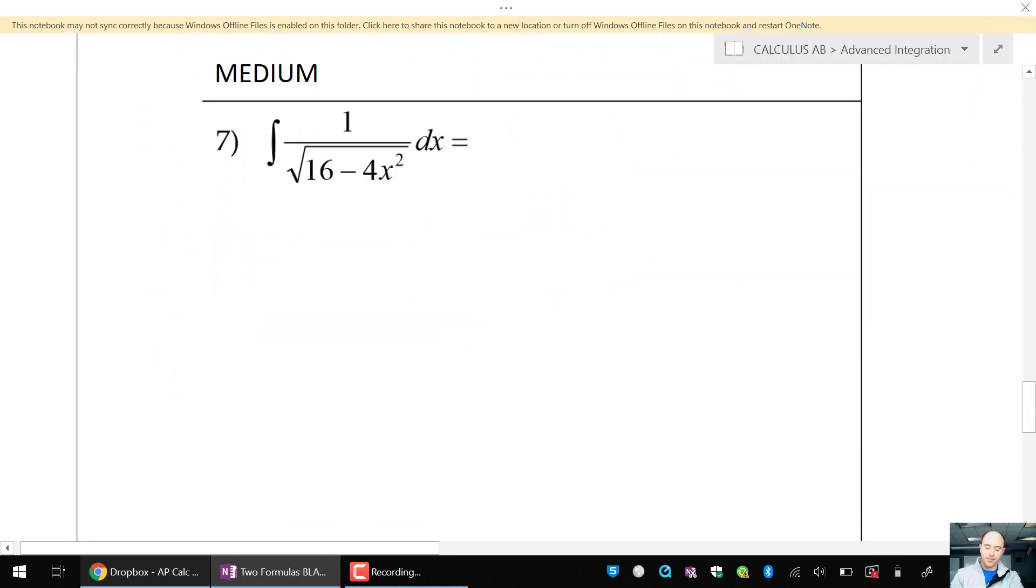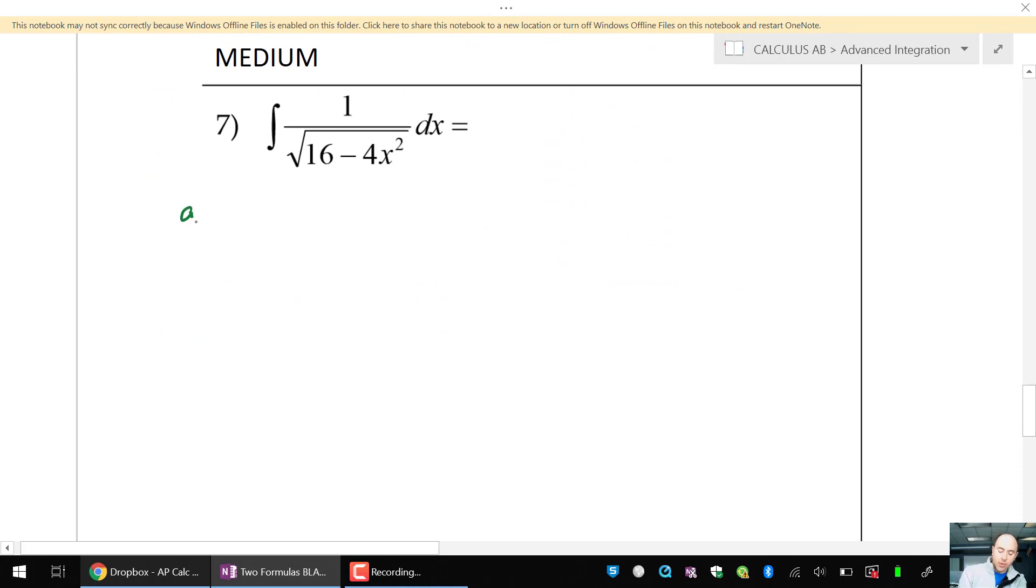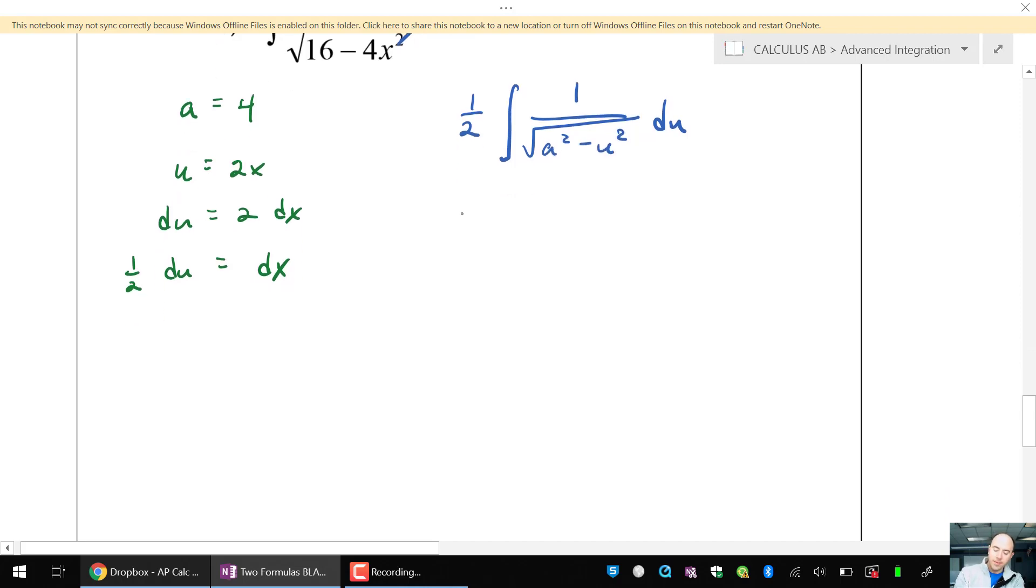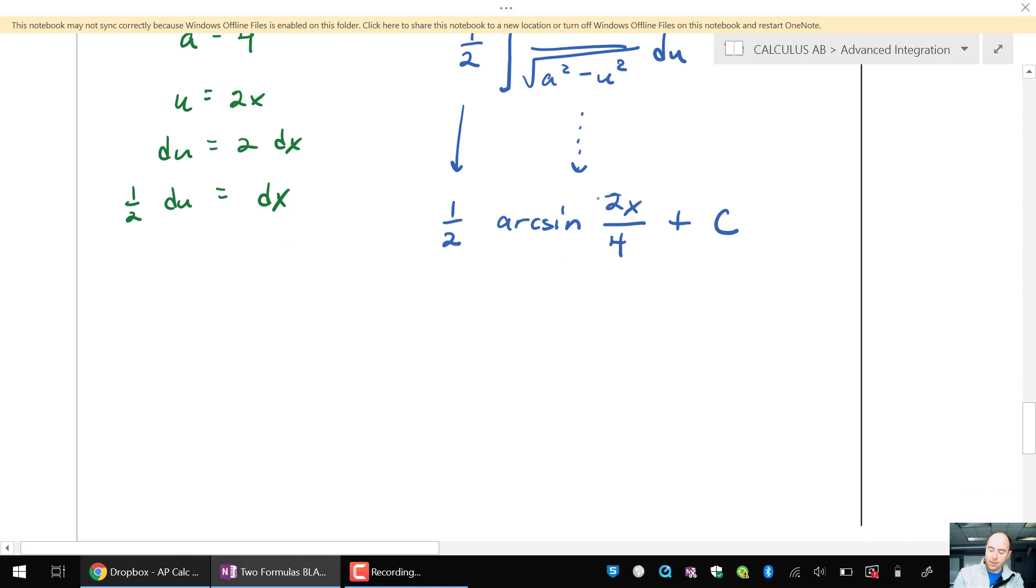How about a medium problem? I see here that a squared is 16, so my a value will be a 4. Looks like the u function would be the square root of 4x squared or 2x. Going to need to use u substitution. dx is going to get replaced by a one-half du. So one-half du and one over square root of my 16. That's basically the a squared minus u squared and there's my arcsine formula. So one-half times arcsine of u over a, 2x over 4. Call that one-half. There's the medium problem.